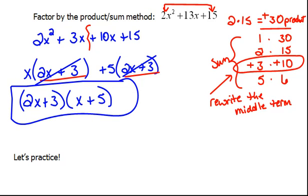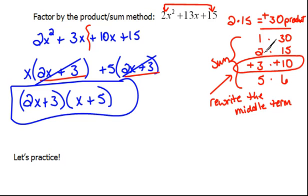So you end up getting, of course, the exact same answer. But at least this way it's a little bit more methodical. There's not all of that — try something, if it doesn't work, try something else. That's why I prefer this, especially when you're dealing with very large numbers. It may take you a little while to list out all the factors, but at least it's something that's very systematic.